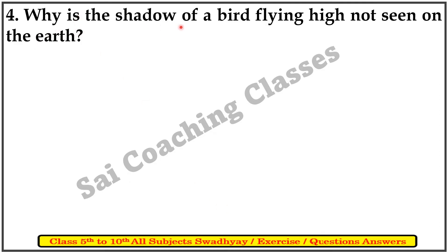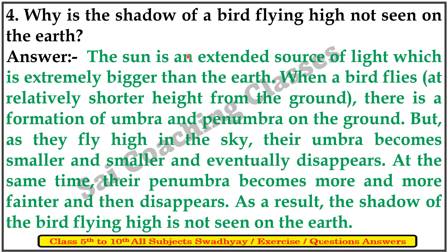Why is the shadow of a bird flying high not seen on the earth? The sun is an extended source of light which is extremely bigger than the earth. When a bird flies at a relatively shorter height from the ground, there is a formation of umbra and penumbra on the ground. But as they fly higher in the sky, their umbra becomes smaller and eventually disappears. At the same time, their penumbra becomes more and more faint and then it also disappears. As a result, the shadow of a bird flying high is not seen on the earth.